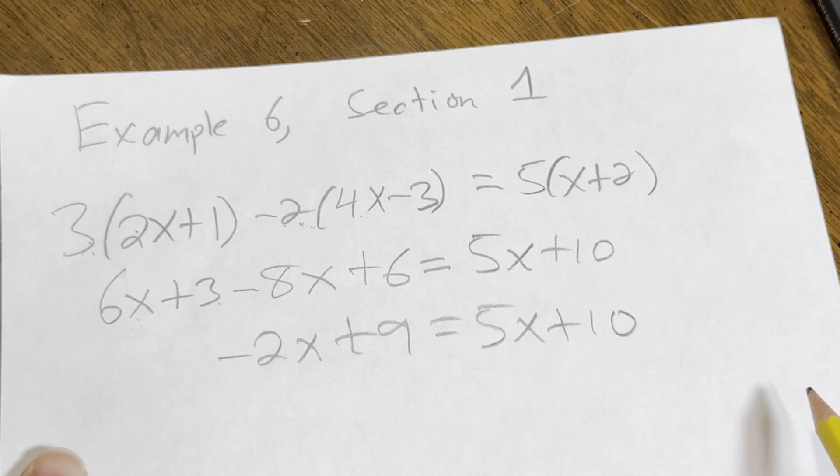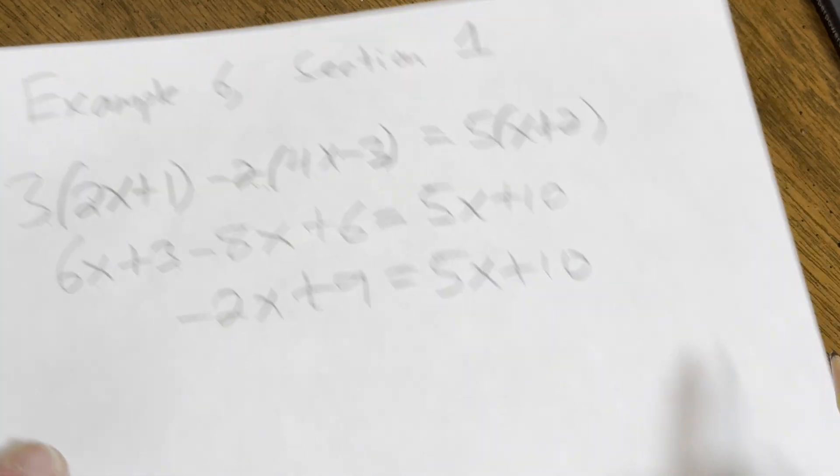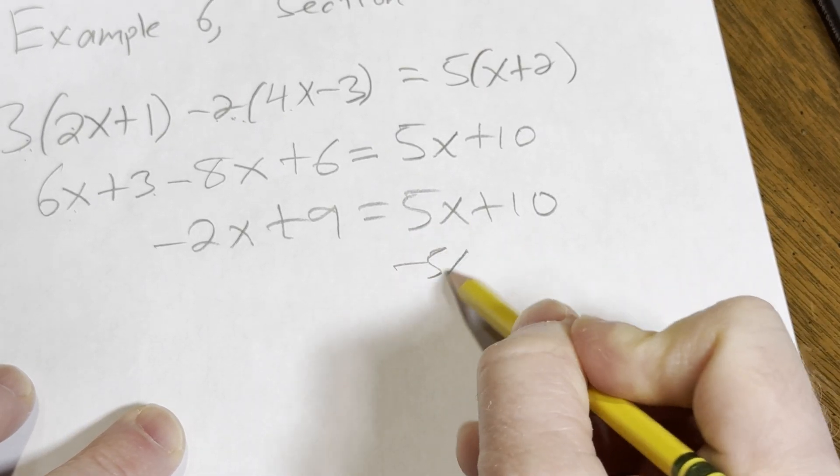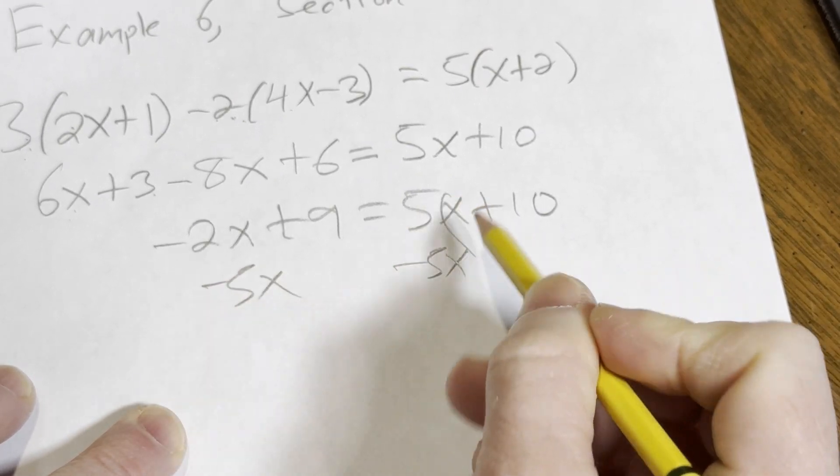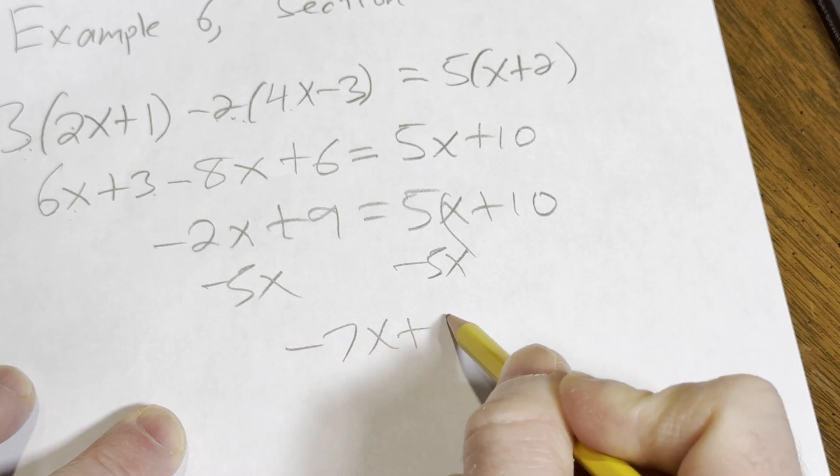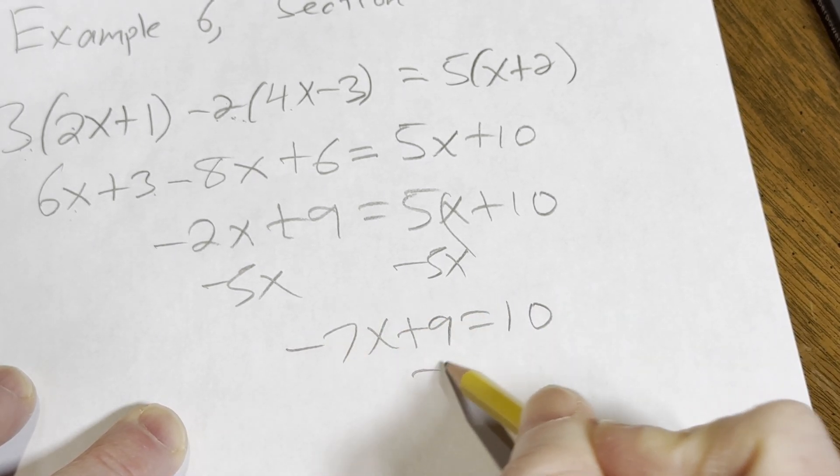All righty, so we could do this all at once or in steps. Let's do it in steps. I'm going to subtract 5x from both sides, so we'll get negative 7x plus nine equals ten. And now we'll subtract nine. Negative 7x equals one.